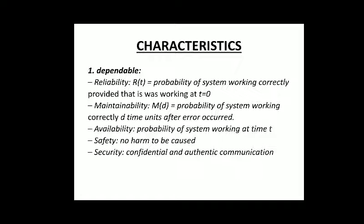Maintainability is the probability of the system working correctly a certain time after an error has occurred — that is, how probable is it that the system will work correctly right after an error. Availability means the probability of the system working at any given time. If the ATM machine is not working, it is not available 24/7. If an ATM machine works only 50% of the time, there is a 50% chance of you getting cash.